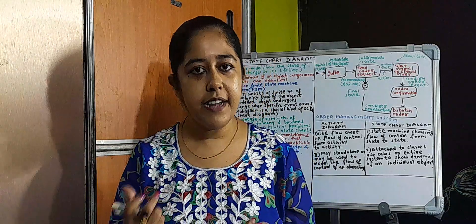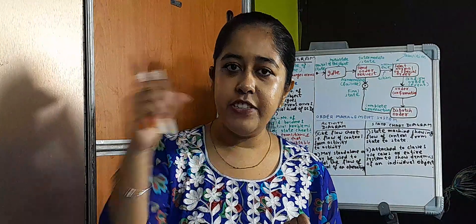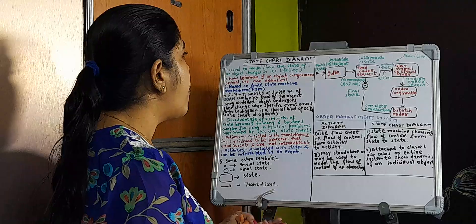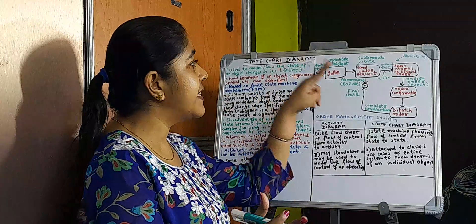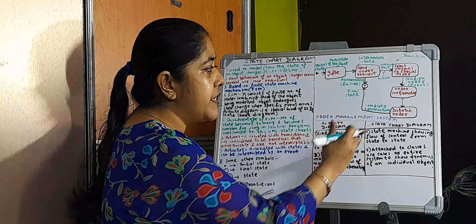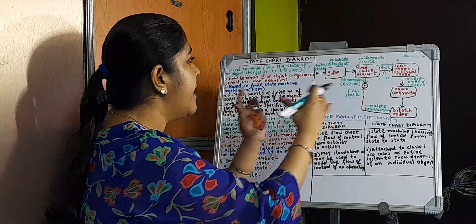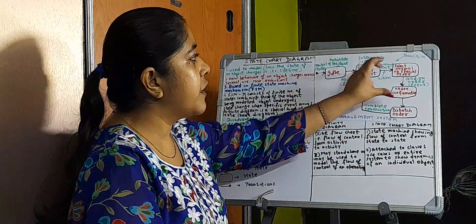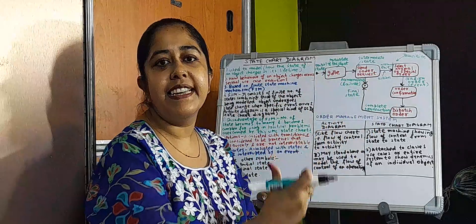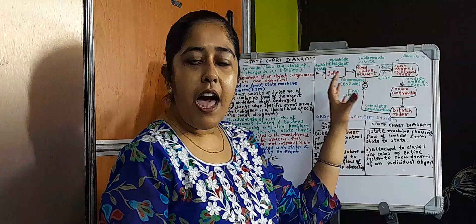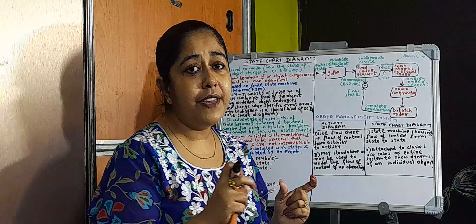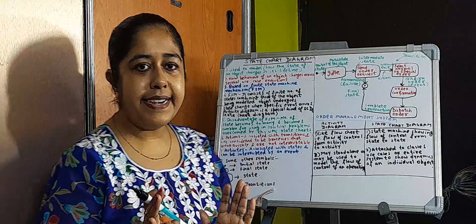Since it is coming under the behavioral view of your system, the state chart diagram also shows how the behavior of an object changes across several use case executions. When those use case executions are going on and the behavior of an object is changing — that is what this kind of diagram shows. Since behavior is the thing which changes from time to time, it will be dynamic in nature.